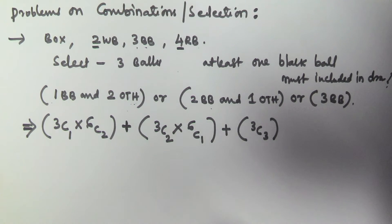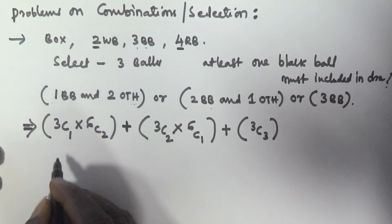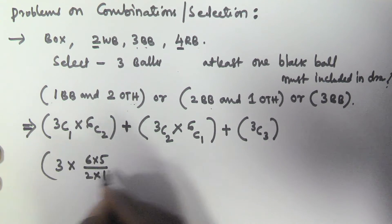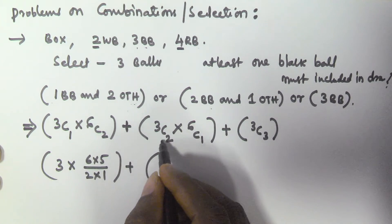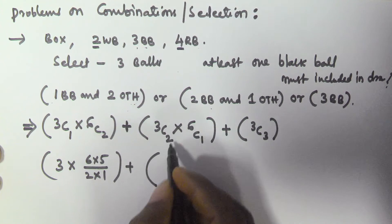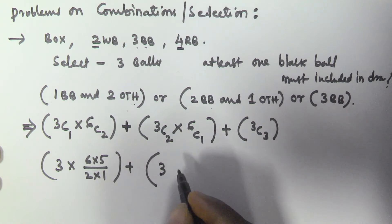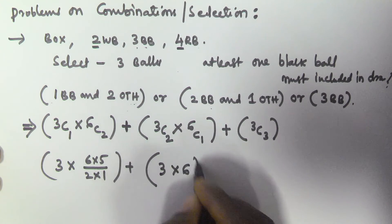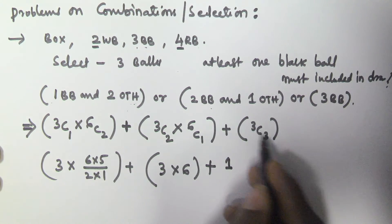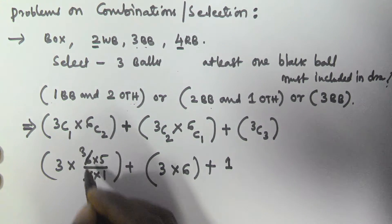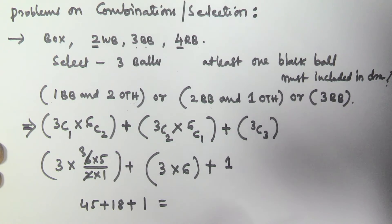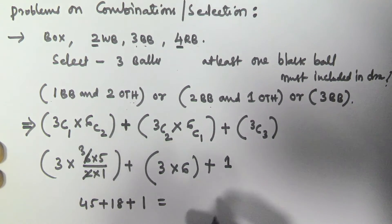Now solving: 3C1 equals 3, and 6C2 equals 6×5 divided by 2×1 equals 15, so 3×15 equals 45. Then 3C2 equals 3C1 equals 3, and 6C1 equals 6, so 3×6 equals 18. And 3C3 equals 1. So 45 plus 18 plus 1 equals 64.